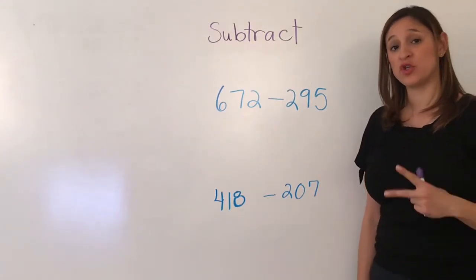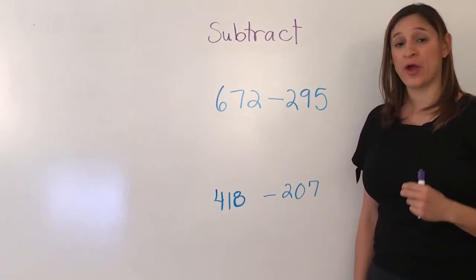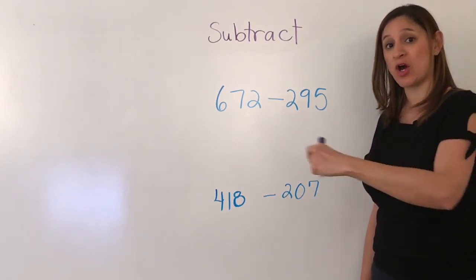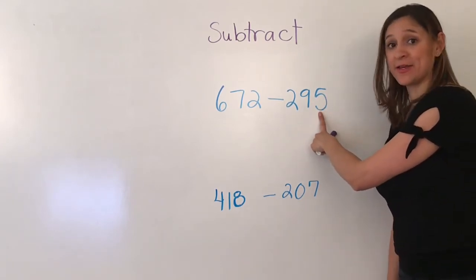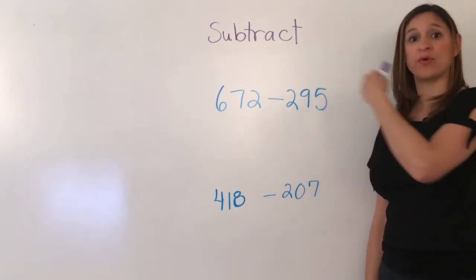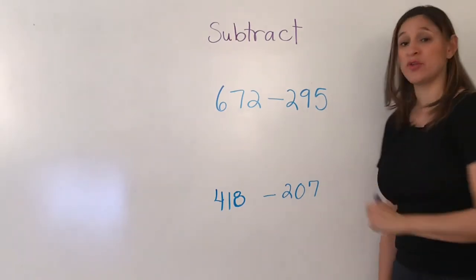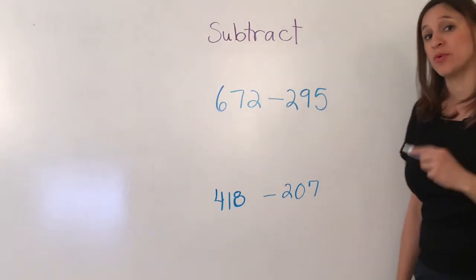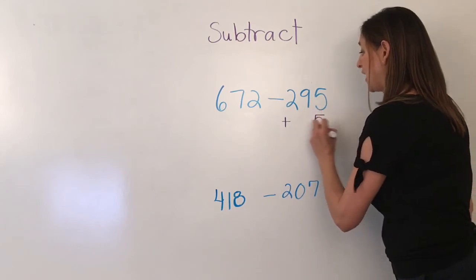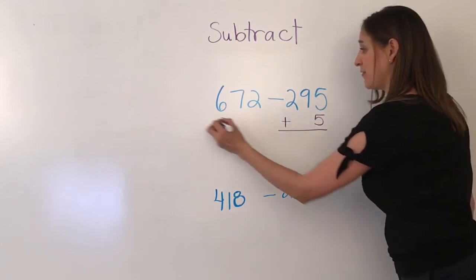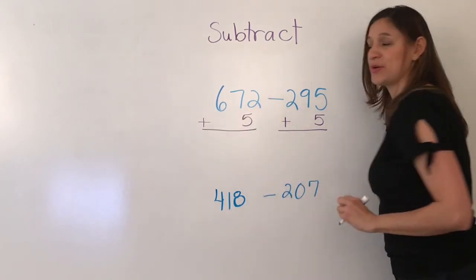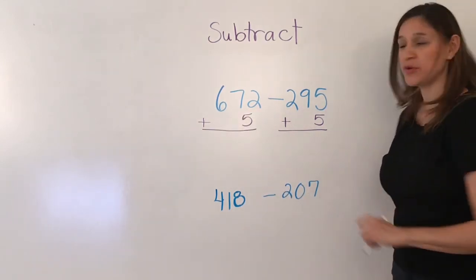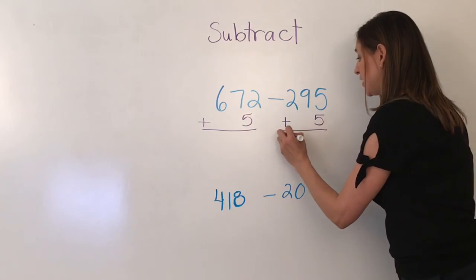Now I will demonstrate two problems where you will need to add on both sides. Because this 5 is 5 or greater in the ones place, you are going to add 5 to both sides. So I will add 5 to 295 and I will add 5 to 672. 295 plus 5 is 300.